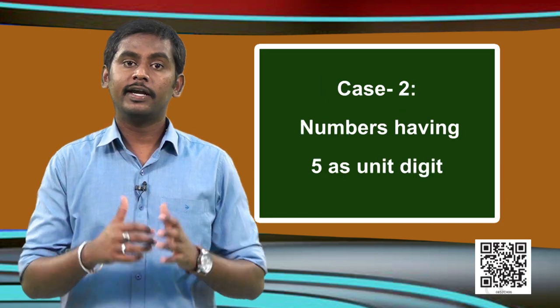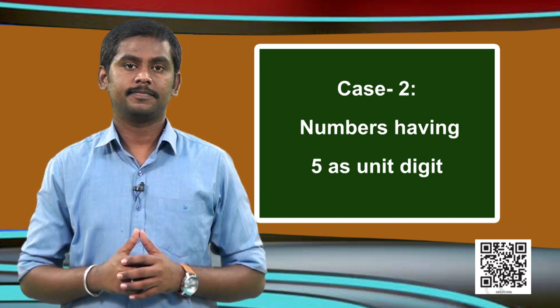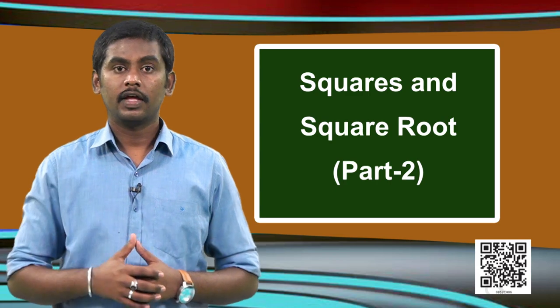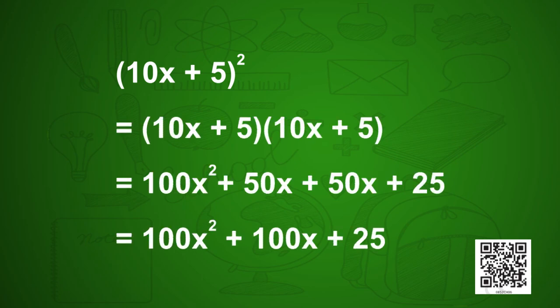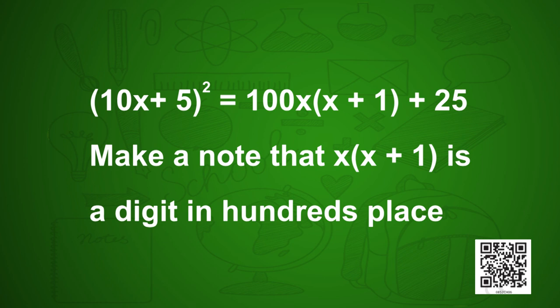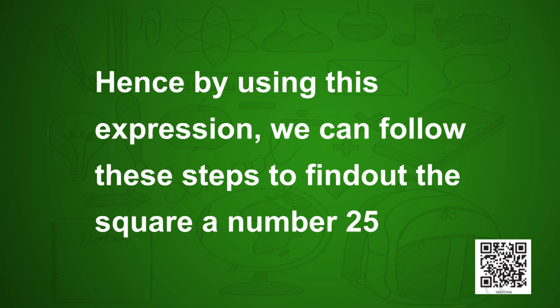Now let us go to the second case where a 2-digit number ends with 5 in its units place. Any such number can be written as 10x + 5. If you take (10x + 5)², we can write it as (10x + 5)(10x + 5), which gives 100x² + 50x + 50x + 25, that is 100x² + 100x + 25. Taking 100x common from the first two terms, we get 100x(x + 1) + 25. So (10x + 5)² = 100x(x + 1) + 25, where x(x + 1) occupies the hundreds place since it is multiplied by 100. We will use this expression and follow steps to find the square of a number ending in 5, for example 25.